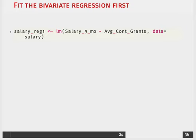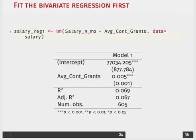We'll first just regress average grants received on salary using the lm function in R. We then get our regression coefficients, and with just one variable — grants — we have a pretty low R-squared value, around 0.07. So we're explaining about 7% of the variation in salary by including grants.